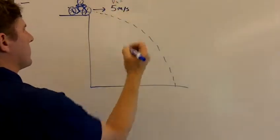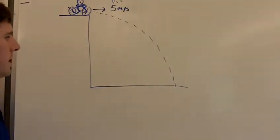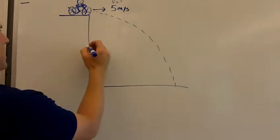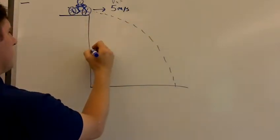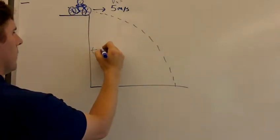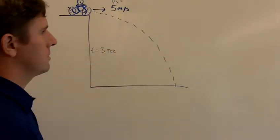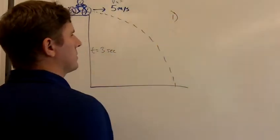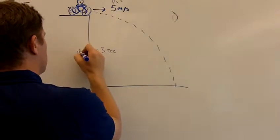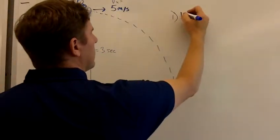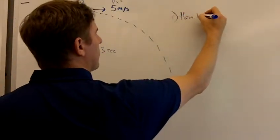Let's say that this guy is in the air, he falls off this cliff, and he's in the air for 3 seconds. A couple of questions we could ask about this: we want to know what is dy going to be, meaning how high was the cliff or how far did he fall.